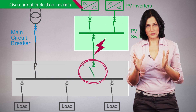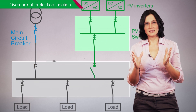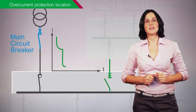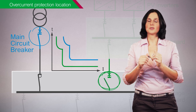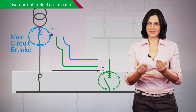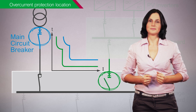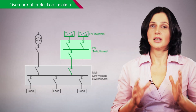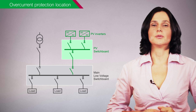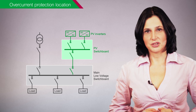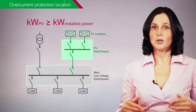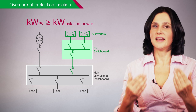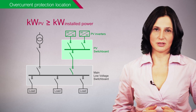To ensure things work properly, this overcurrent protection should be coordinated with the main circuit breaker to guarantee selectivity. This selectivity may not be so easy to achieve, in particular when the photovoltaic production capacity is equivalent to or higher than the building's installed power.